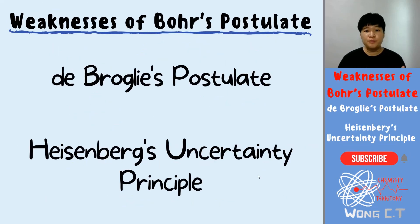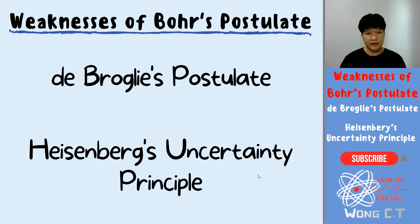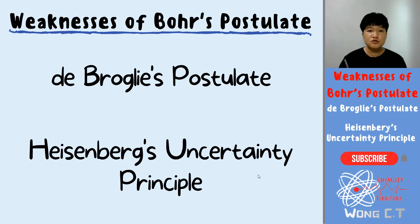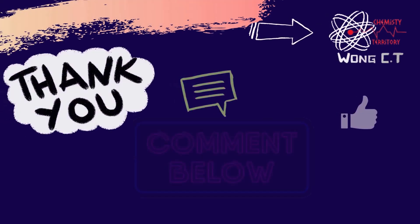So these are the two postulates and principles that point out the weaknesses in Bohr's postulates. Make sure you know what de Broglie's postulate talks about and what Heisenberg's uncertainty principle points out. Thank you for watching this short video — make sure you like the video and subscribe to the channel. If you have any questions, drop them in the comments below and I'll get back to you as soon as I can. See you in the next video!